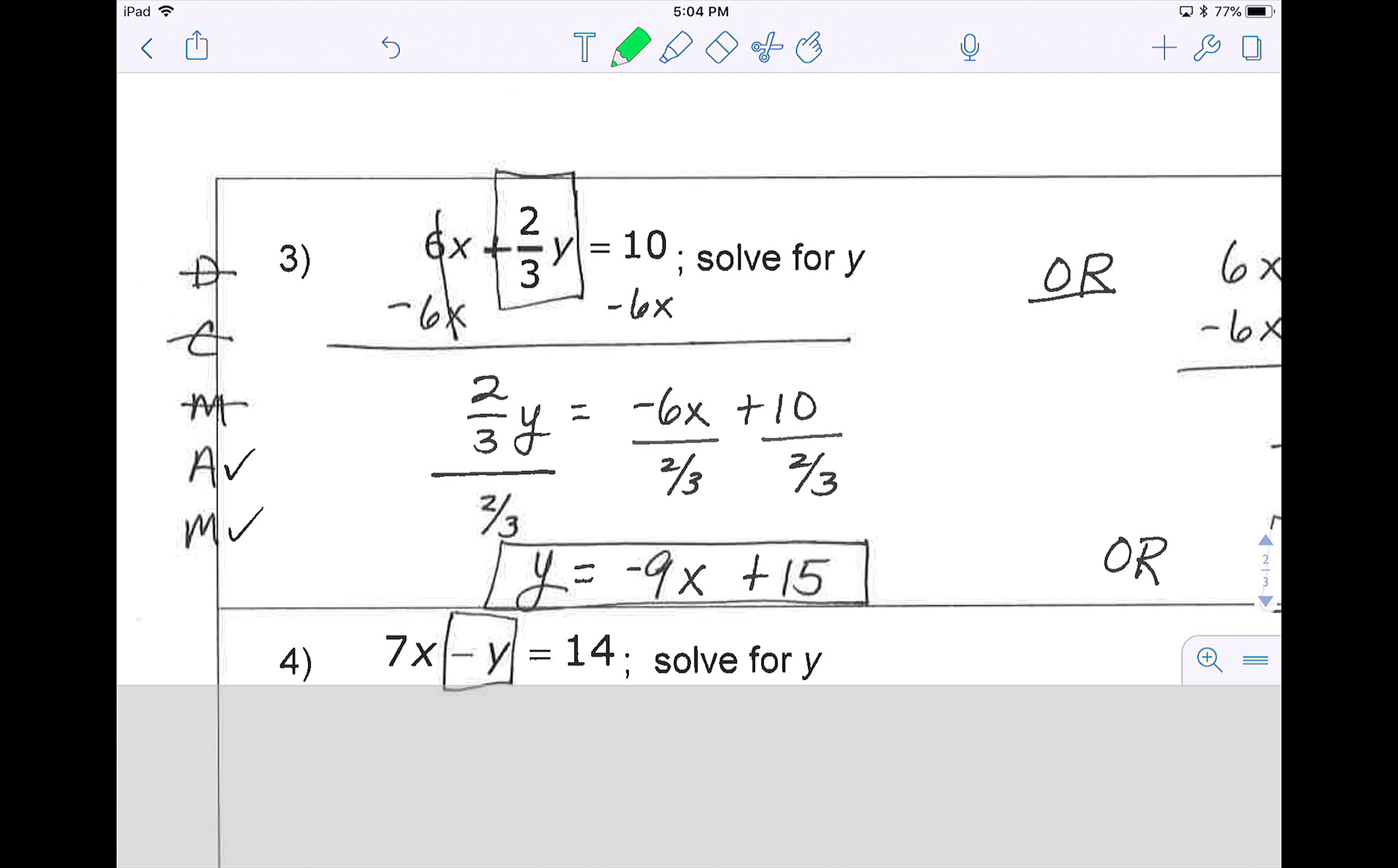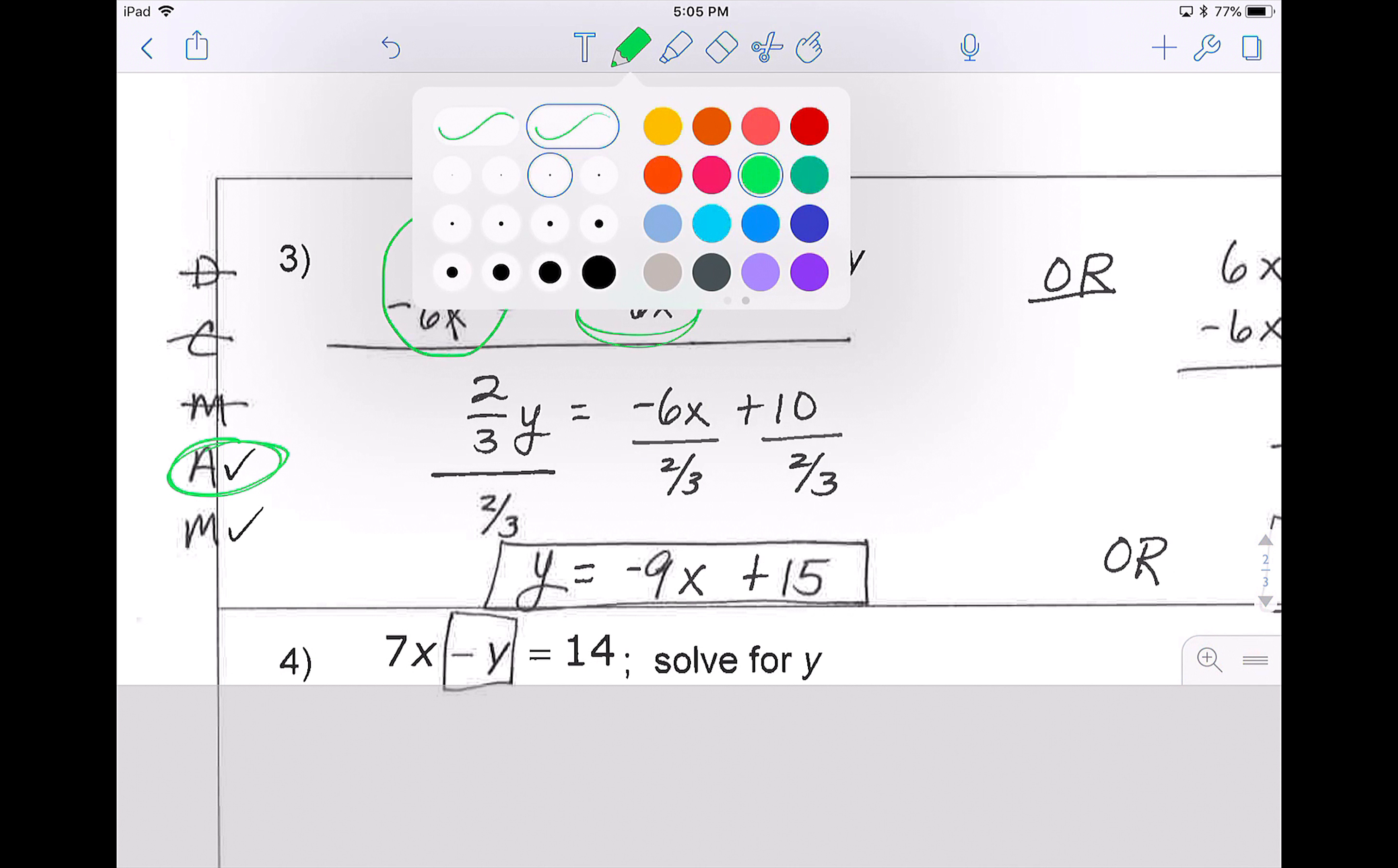Problem three has been done for us. So notice they knocked out the first three, don't call me, because there's no distributing, there's no repeated letters or numbers, and there's nothing we need to move because there's only one box. This one, they did have to add or subtract because there was an addition or subtraction. So my addition and subtraction I'm showing you in green. They move 6x to the other side by making it a negative.